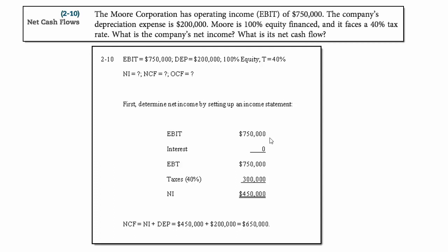If we put together an income statement of what we know: EBIT minus interest gives us earnings before taxes. Since they're 100% equity financed, there's no interest expense. I meant to say minus interest expense, not minus taxes. So we come down to earnings before taxes, multiply that times 40% to get the taxes, and you get net income.